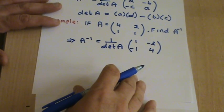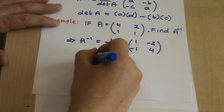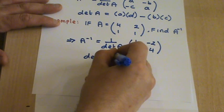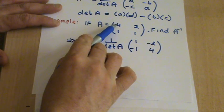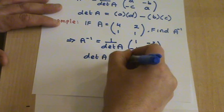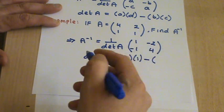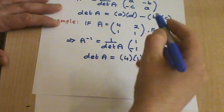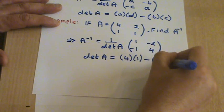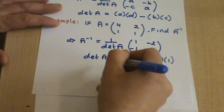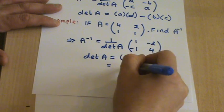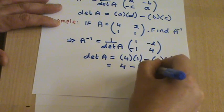The next step is to calculate the determinant of A. So the determinant of A is got by multiplying the 4 by the 1 minus multiplying the 2 by the 1. And this gives you 4 minus 2, which equals 2.